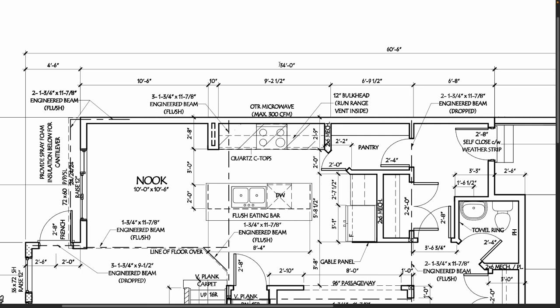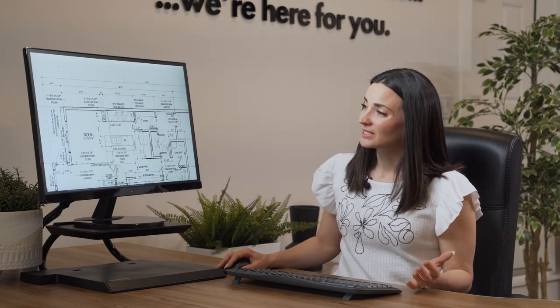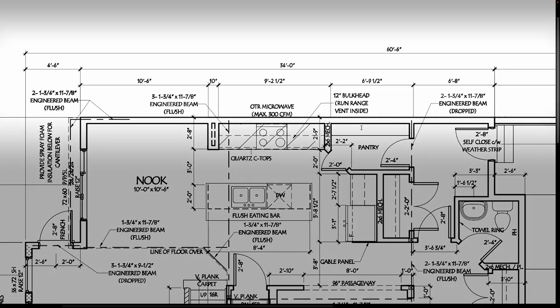First thing to note is that all floor plans are done using imperial measurements. On the plan, to reference feet we have the apostrophe symbol, and to refer to inches we have the quotation mark symbol. This is really important because it's going to show our distances from one point to another. It can often get really confusing because as you can see here, we have lots of different measurement lines going on.